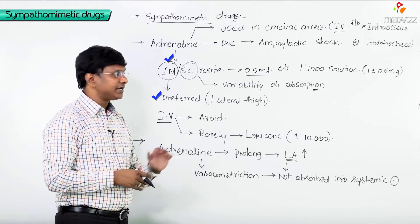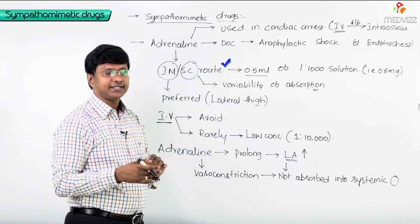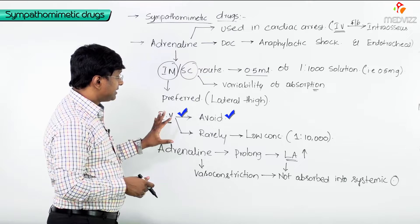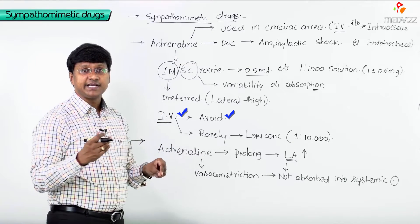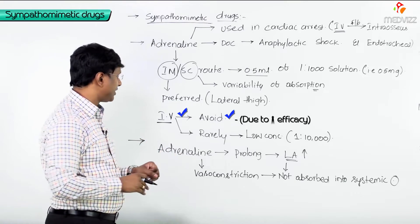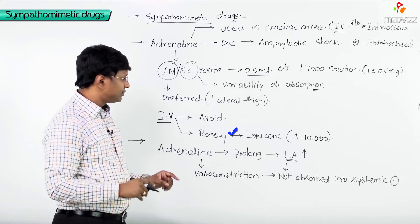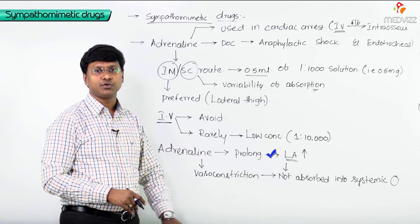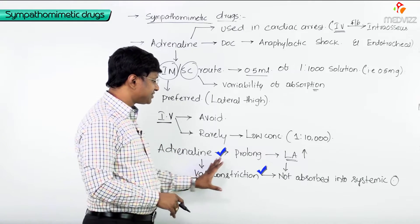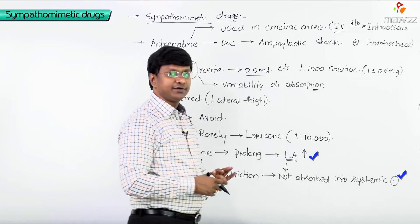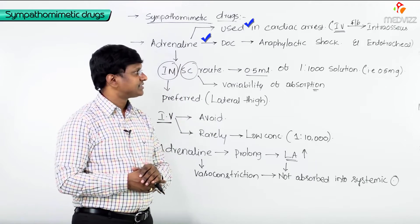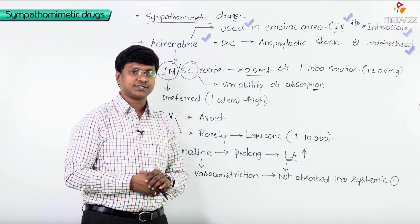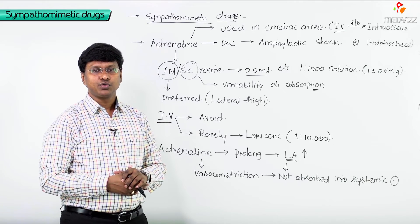The intramuscular route is preferred at the lateral thigh; subcutaneous is less preferred due to variability of absorption. IV route is avoided due to increased efficacy risk, and if used rarely, it should be at a dilution of 1:10,000. Adrenaline with local anesthetic prolongs its duration via vasoconstriction. In cardiac arrest, the route is IV, followed by intraosseous and endotracheal.